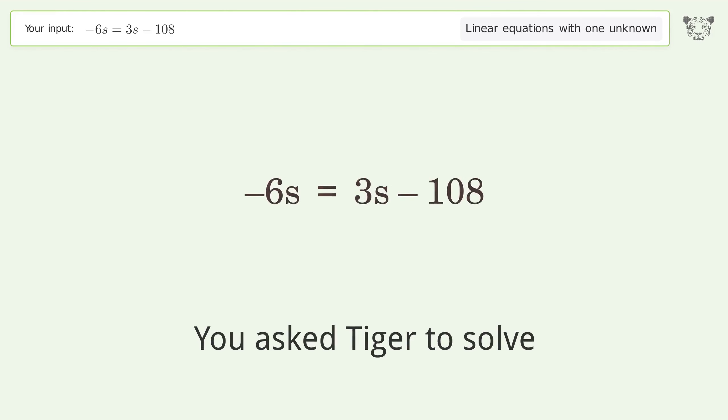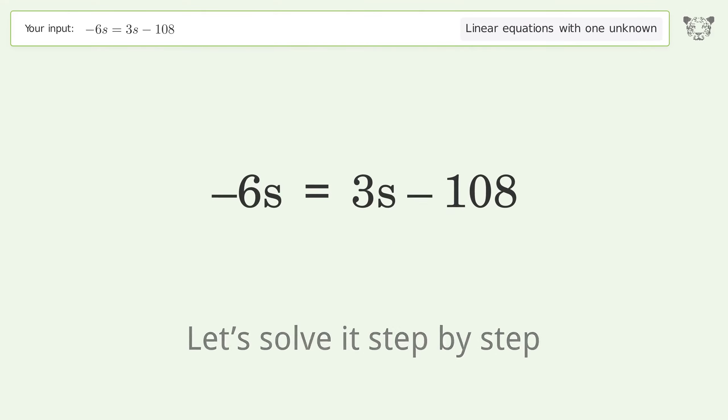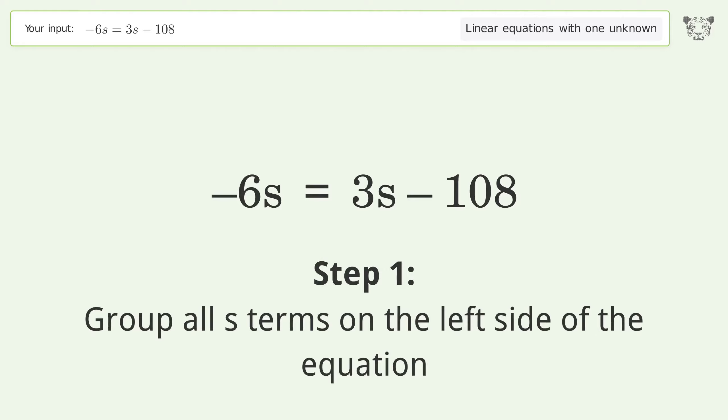Let's solve this linear equation with one unknown. The final result is s equals 12. We'll solve it step by step. First, group all s terms on the left side of the equation.